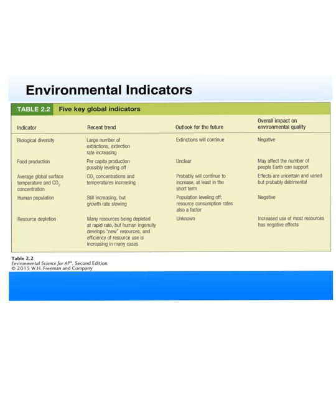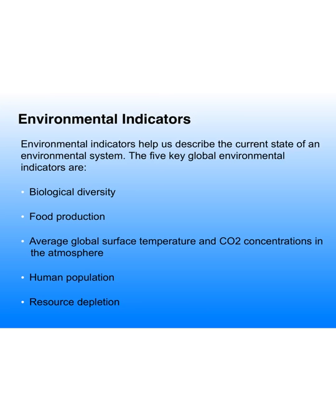The human population itself has a negative impact on the environment because we manipulate it more than anything else. And then resource depletion — an increased use of most resources has negative effects, especially things like coal and natural gas that break down into acids in the air, and tailings, which are little leakages from mining shafts that get into lakes, streams, and soil and cause havoc. So the process of mining and using resources has an effect on the environment. Environmental indicators include: biological diversity, food production, CO2 and temperature, human population, and resources.